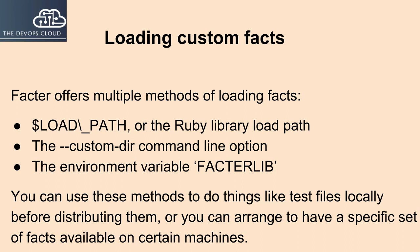Facter offers multiple methods of loading facts, like $load_path or the Ruby library load path, the custom_dir command line option, and the environment variable FACTERLIB. You can use these methods to do things like test files locally before distributing them, or arrange to have a specific set of facts available on certain machines.